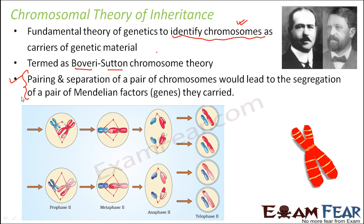If you look at the process of cell division, whether meiosis 1 or meiosis 2, you get to see that everywhere it is the chromosome that gets divided. The separation happens between the chromosomes, and every time chromosomes separate, the genes also get separated. Each of these then goes to a new individual or new offspring, and this is how genetic traits are passed on from one generation to the other.